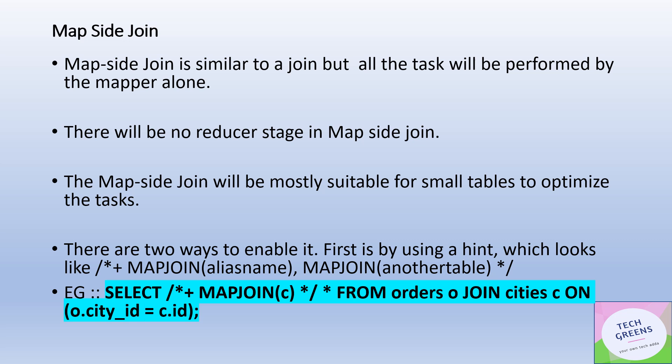Now let's see what is map side join. Map side join is similar to a join, but all the tasks will be performed by the mapper alone — there would not be any reducer stage in map side join. That is how it differs from the normal join. Map side join is best suited where one of the tables in the join is small — small meaning the entire data could be stored in the memory of the different nodes in the cluster.